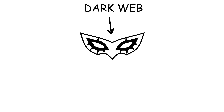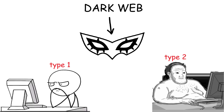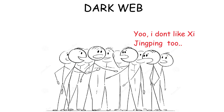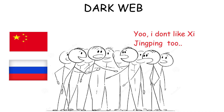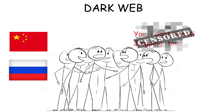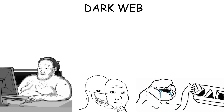Since the dark web is built for anonymity, there are usually only two main types of users. The first is journalists or activists who want to gather information and communicate safely in authoritarian countries like China or Russia, because those countries typically have strict Internet censorship. The second type is, of course, those who want to access illegal and messed up stuff.